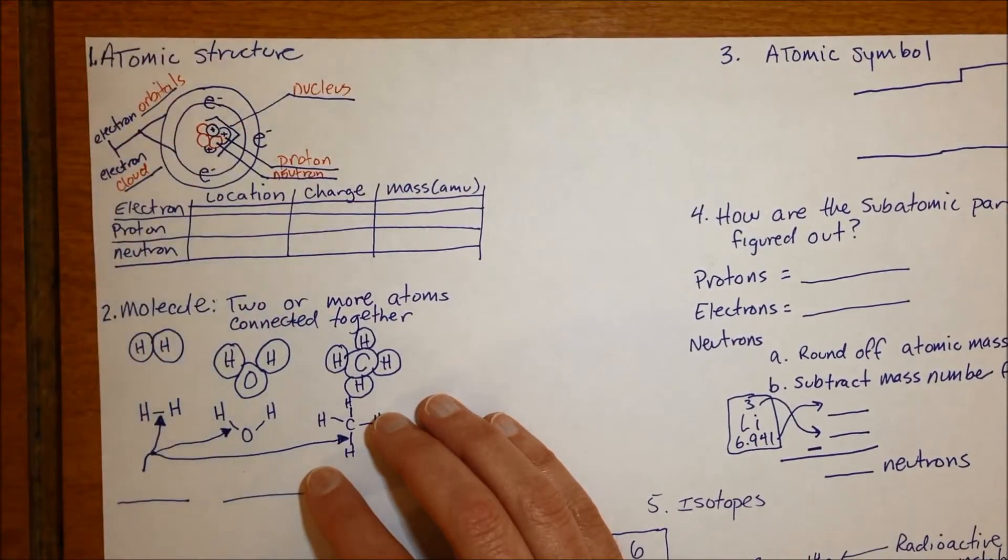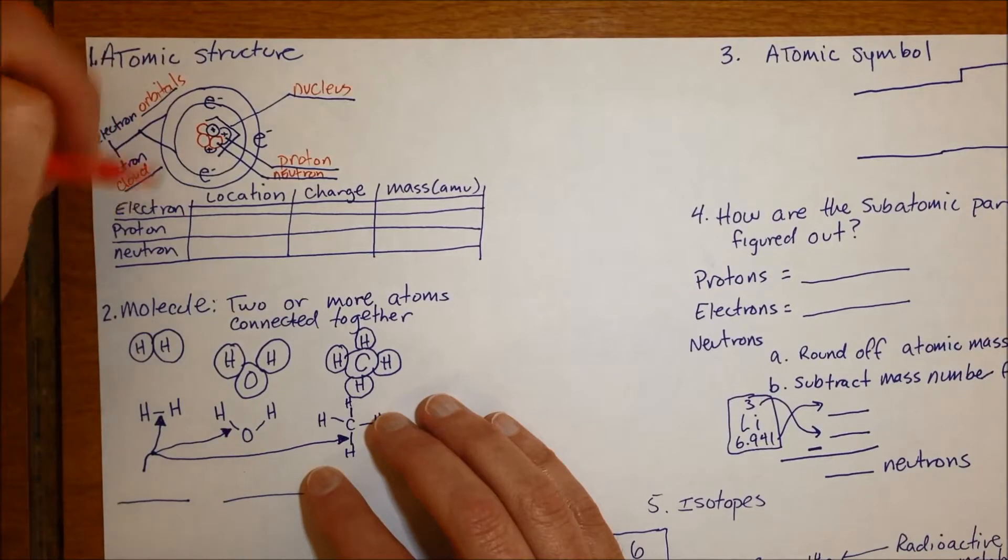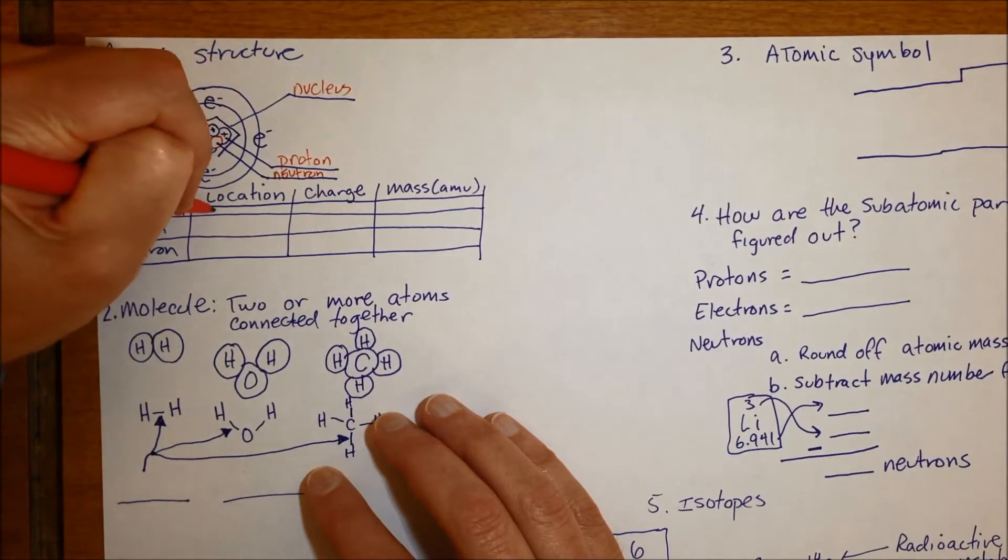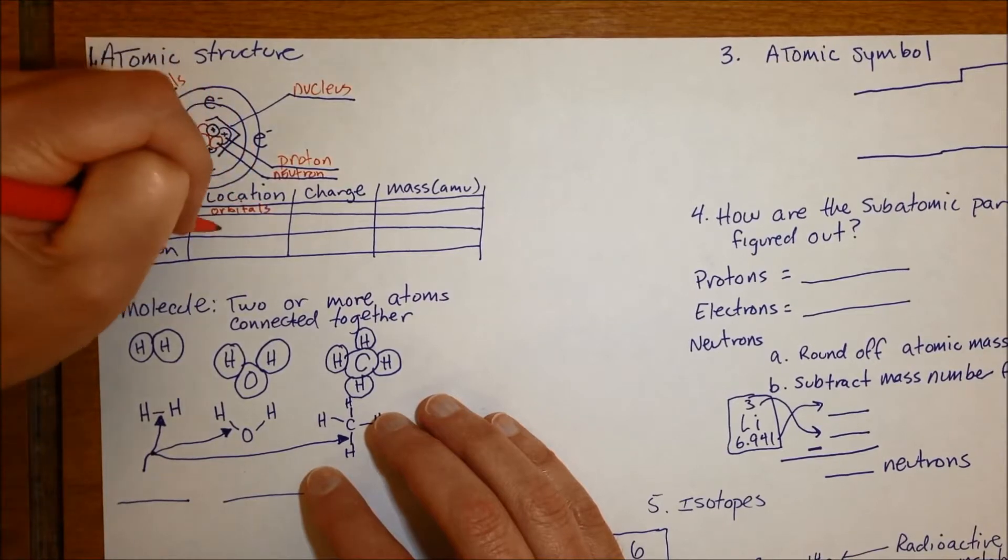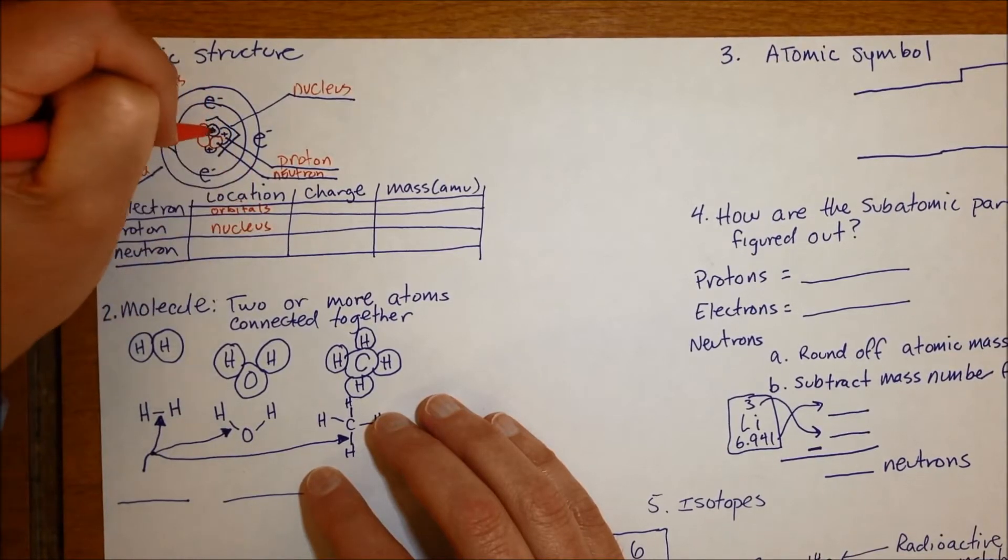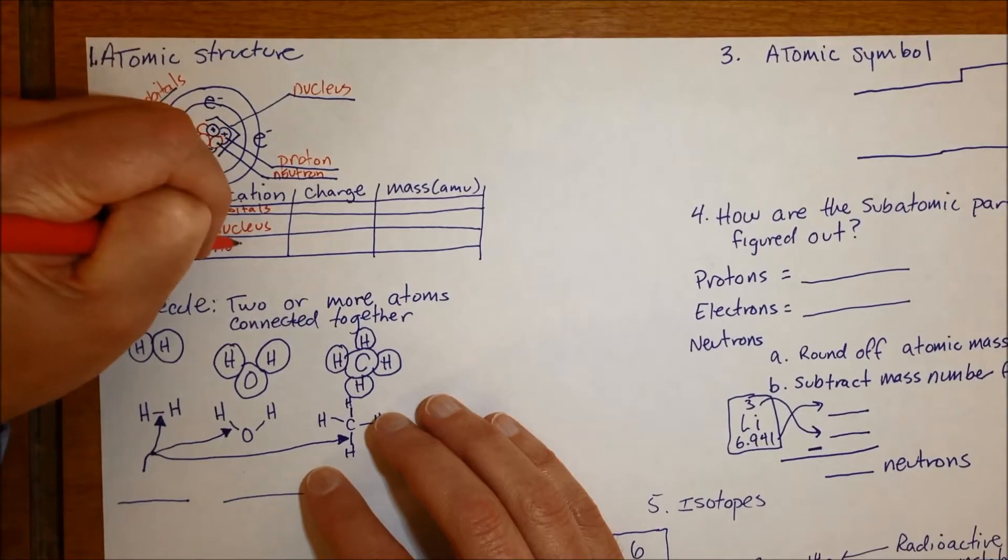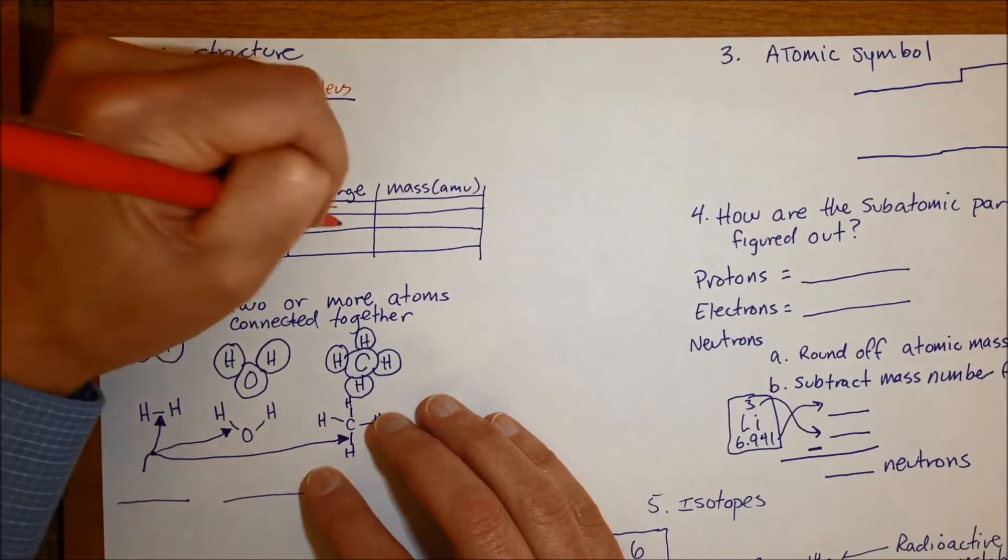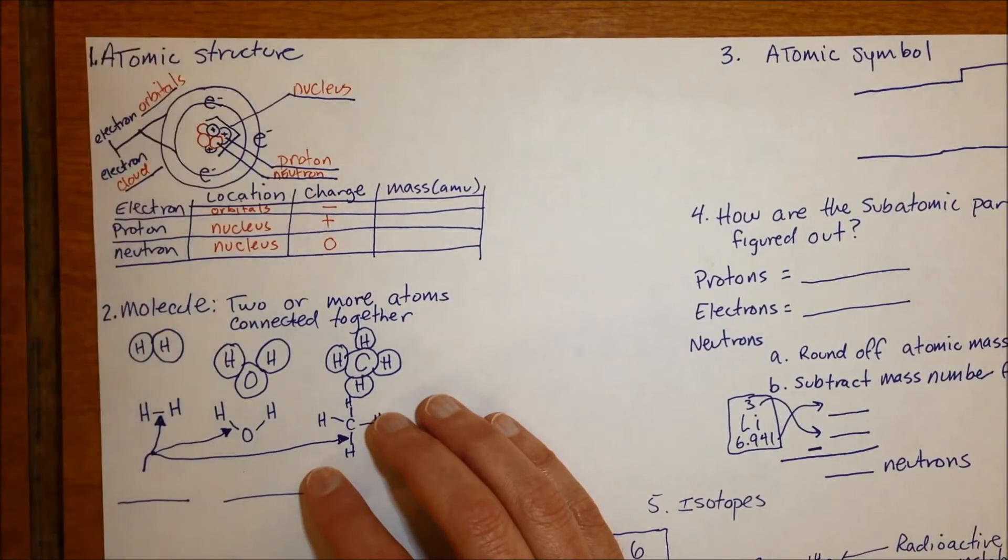A little summary table of the different parts. You need to know as far as location goes, electrons in the orbitals, protons in the nucleus. Charge-wise, electrons are negative, protons are positive, neutrons have no charge.